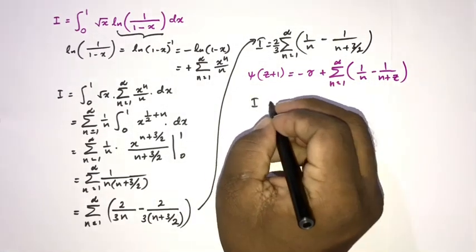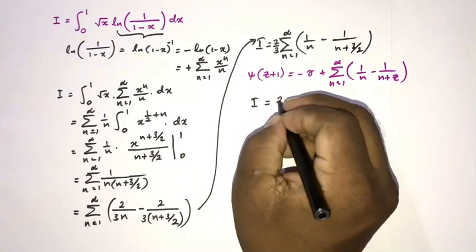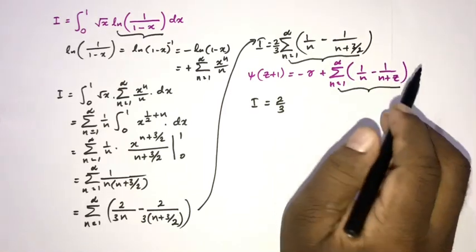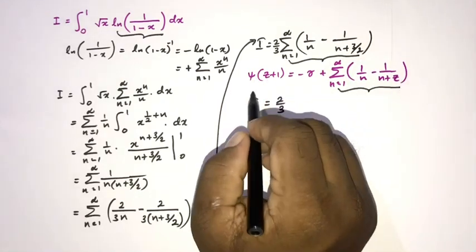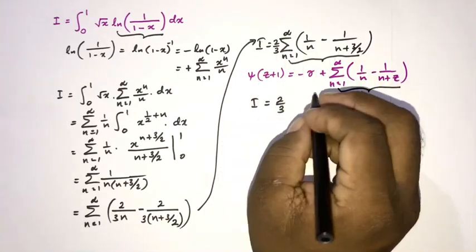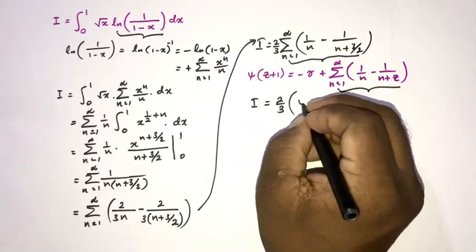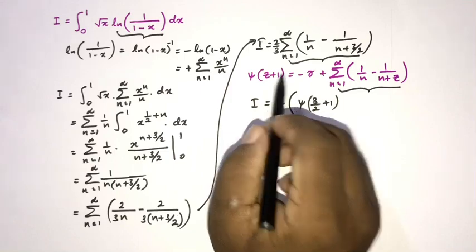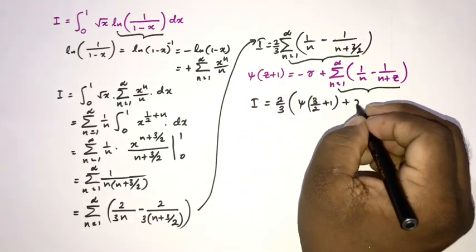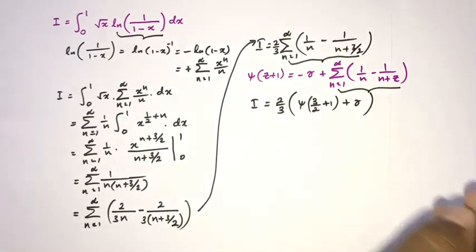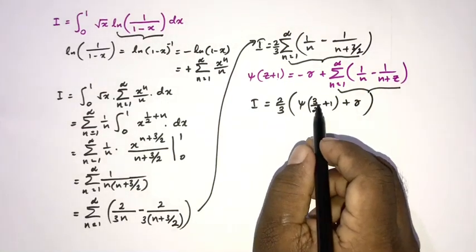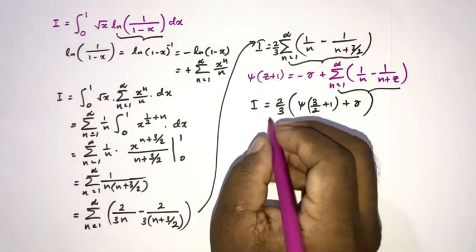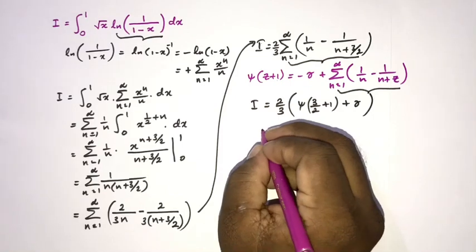We can write I equals two thirds times the digamma of (three halves plus 1) plus gamma. Substituting c equals three halves, we get the digamma of five halves plus the Euler-Mascheroni constant gamma. Now I apply the recurrence formula for the digamma function: the digamma of (x plus 1) equals the digamma of x plus 1 over x.